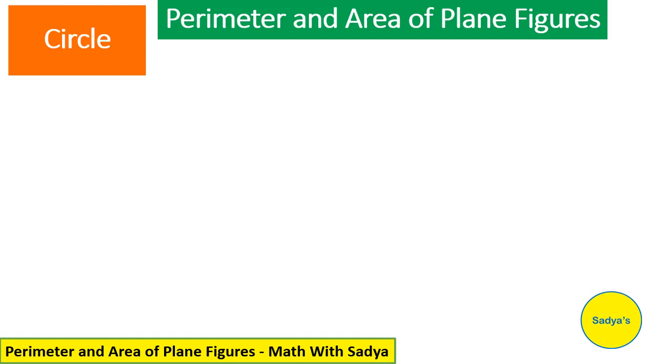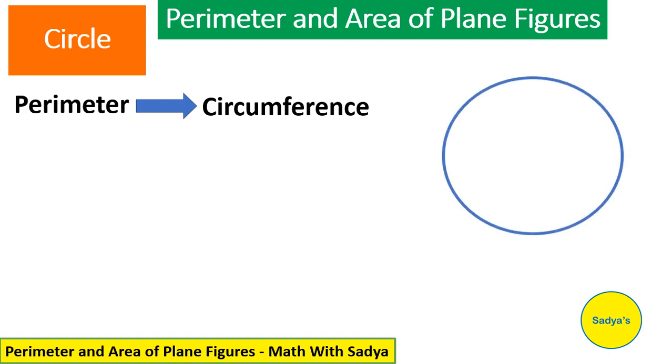Now, we move to the most interesting shape which is circle. The perimeter of the circle is known as circumference. And by perimeter of the circle, we mean the outer boundary of the circle which is shown with blue color. The distance from the center of the circle to the edge of the circle is known as radius. If we draw a line from one edge of the circle to the other which passes through the center, then that line is known as diameter. And diameter is always double of radius. Or you can say radius is half of diameter.